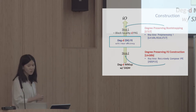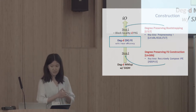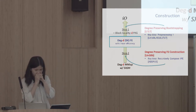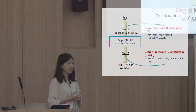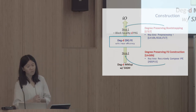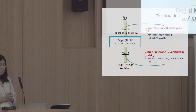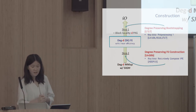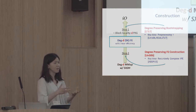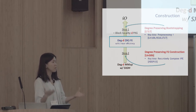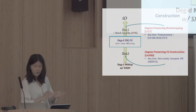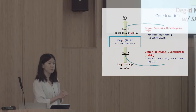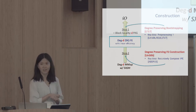Step one is to go from degree-d FE to IO, where we use the block-locality-d PRG. We give a degree-preserving bootstrapping ensuring block locality equals exactly the degree of the FE needed. The key idea is preprocessing. In step two, we construct those low-degree functional encryptions using low-degree multilinear maps, again obtaining a degree-preserving construction. The key idea there is to recursively compose a very simple type of FE for computing an inner product.